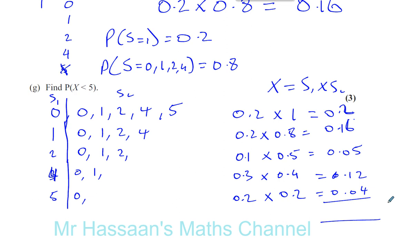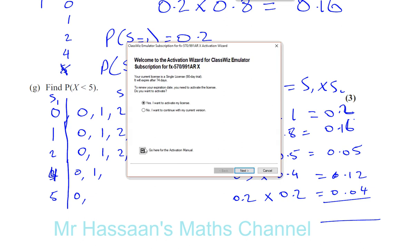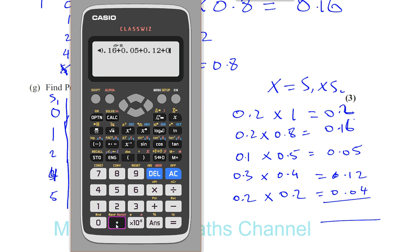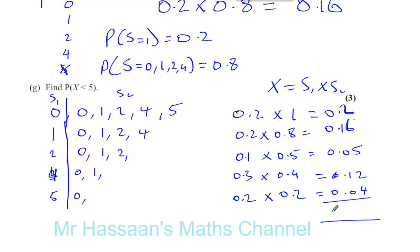Combining all these probabilities gives the probability of X being less than 5: 0.2 + 0.16 + 0.05 + 0.12 + 0.04 = 0.57.